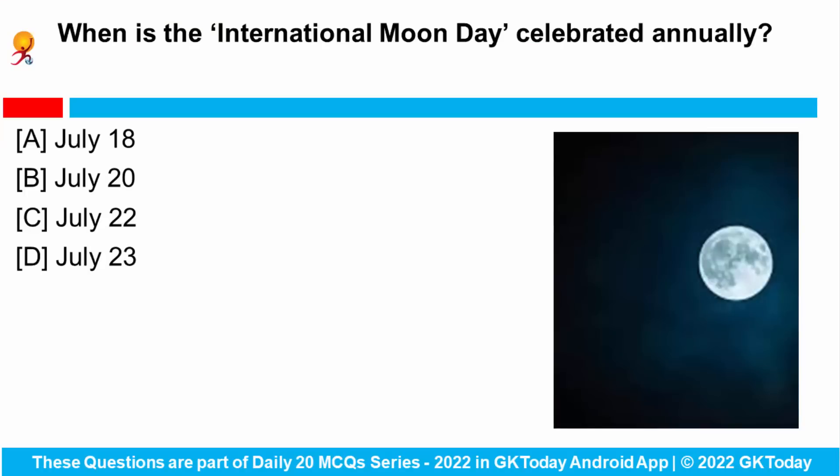When is the International Moon Day celebrated annually? The United Nations General Assembly officially declared that we will celebrate International Moon Day every year on July 20th.